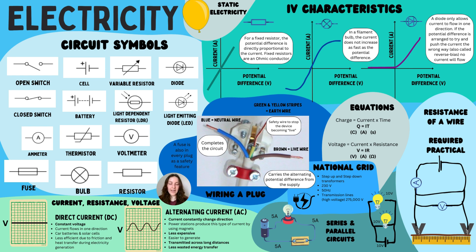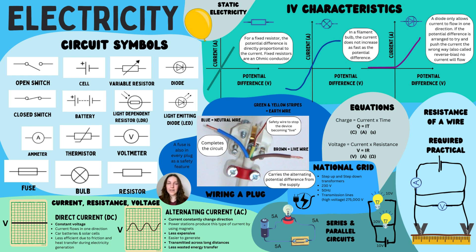The national grid is composed of long transmission lines with very high voltages of around 275,000 volts. In the UK we only receive 230 volts due to step-down transformers. Step-up transformers are at the start of the national grid to increase that voltage so it can be transferred across long distances. The frequency of the UK grid is 50 hertz.